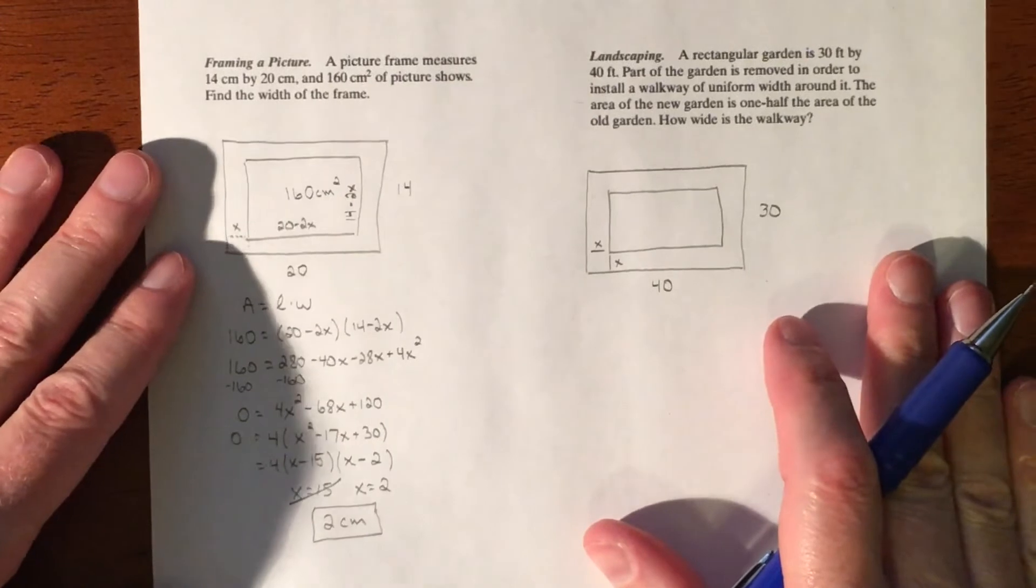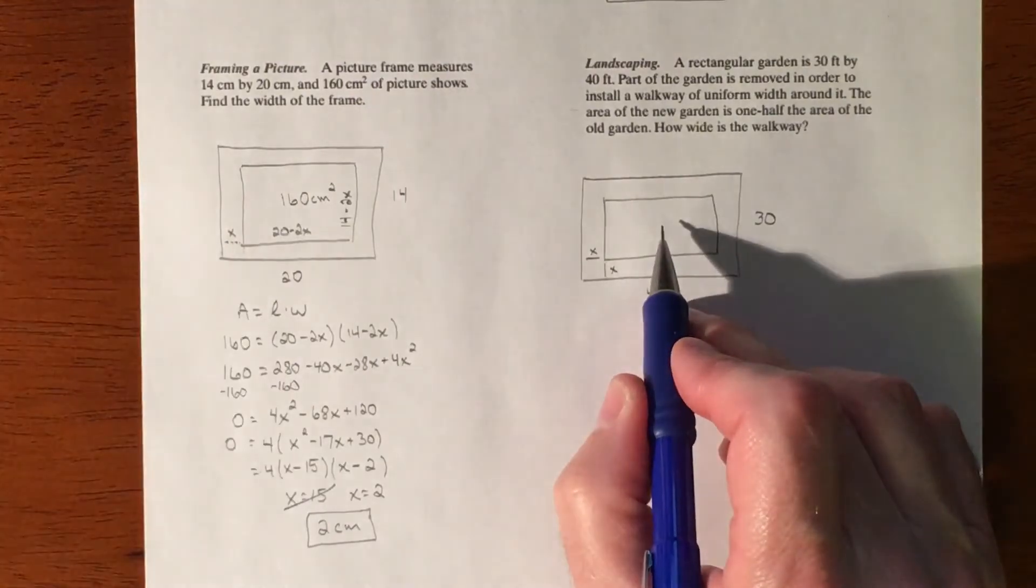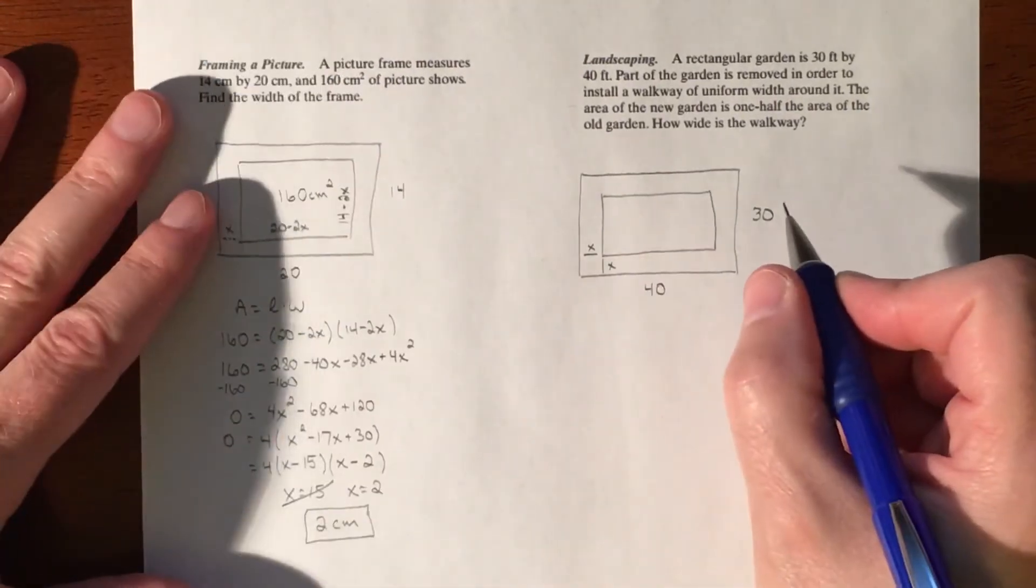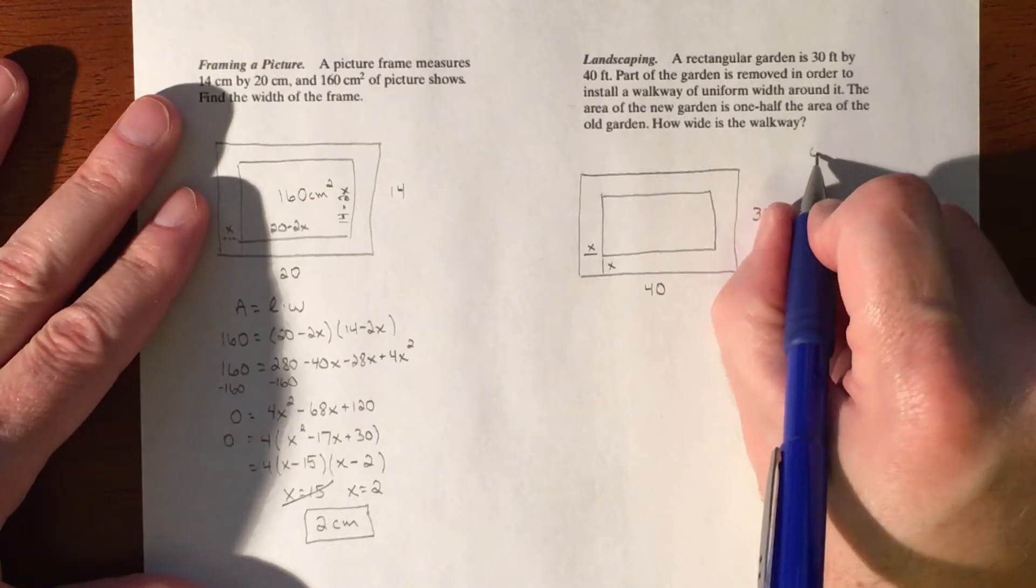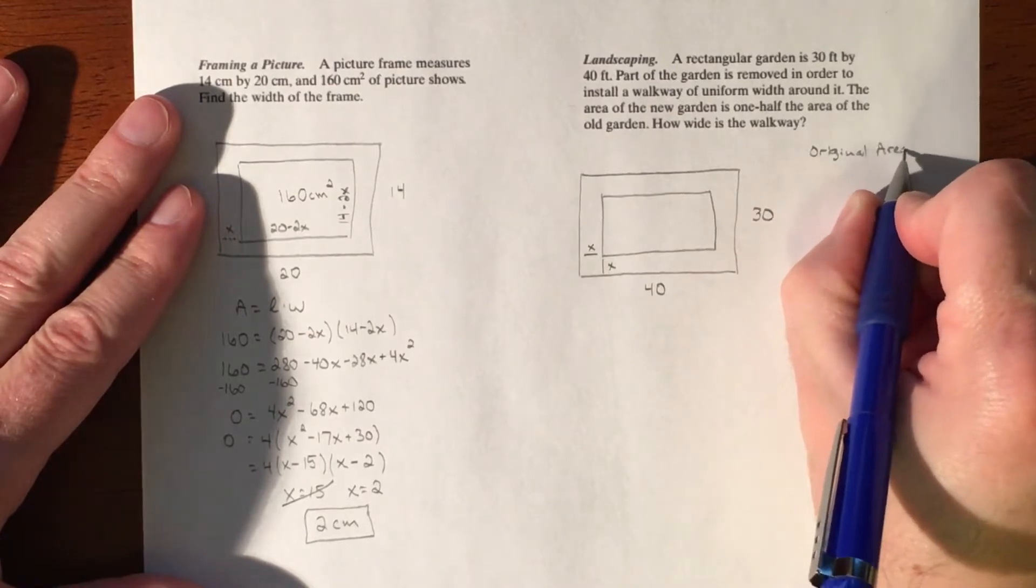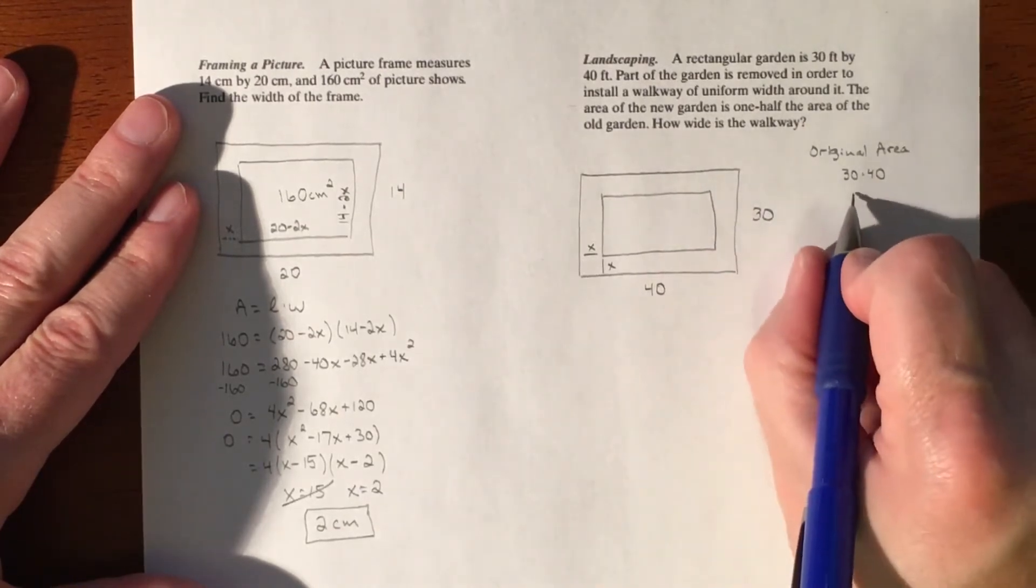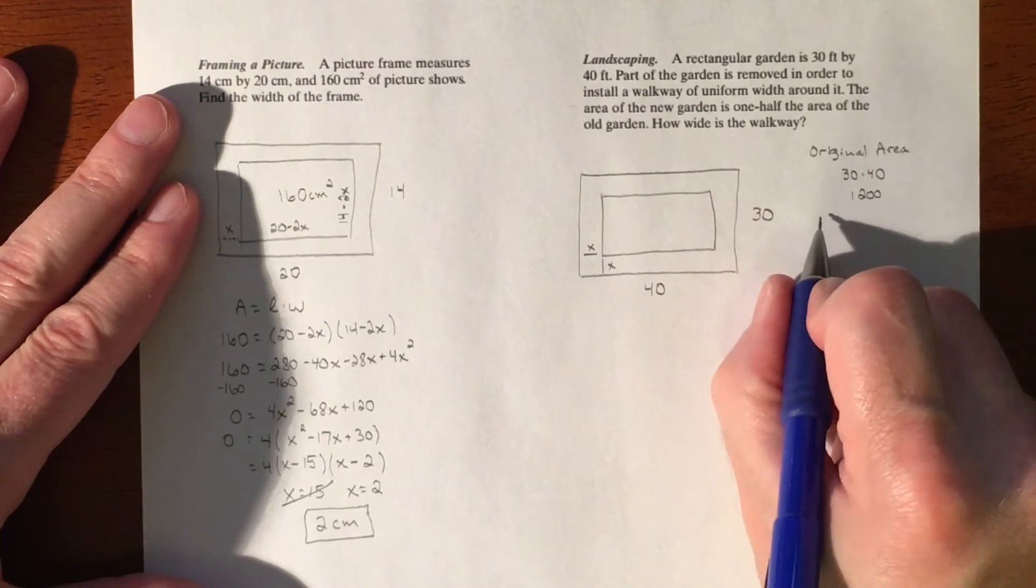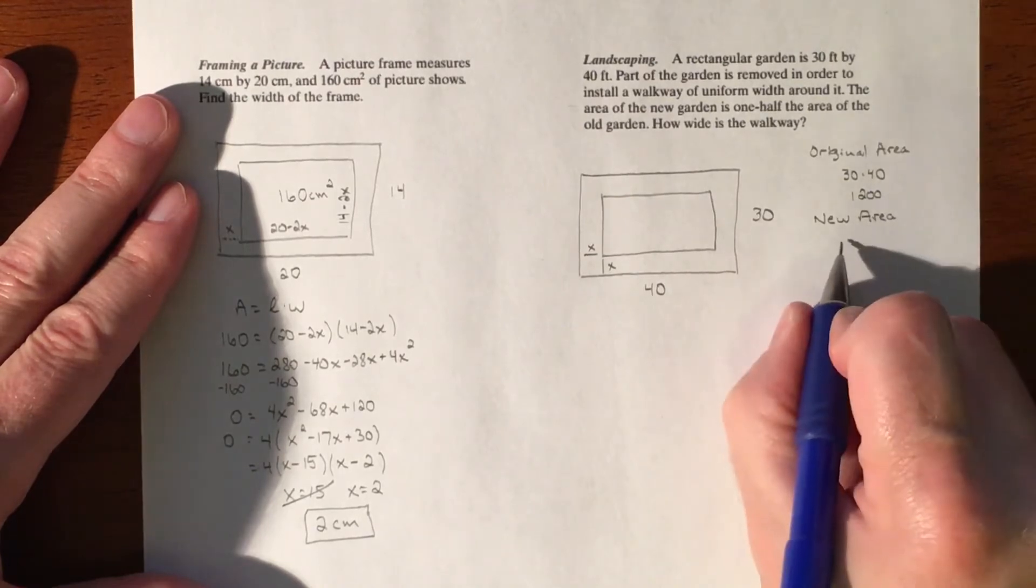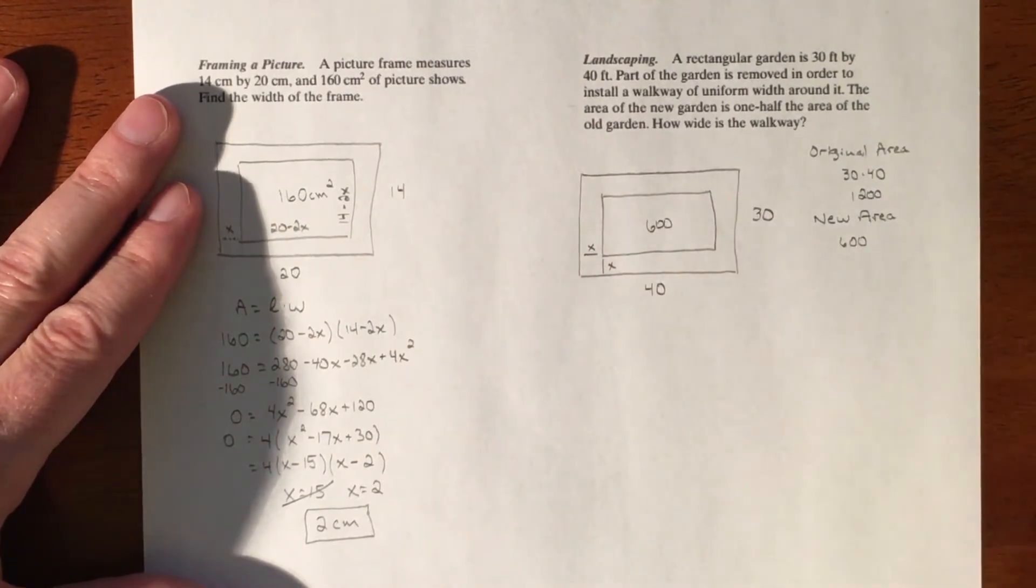So we could treat it very similar. It does say that the area of the new garden, which is in here, is one half the area of the old garden. So this value they just don't straight up give it to us, we got to figure it out. So we have original area. The original area was 30 by 40, which made it 1200. So then that puts your new area at half of that, so our new area is going to be 600.